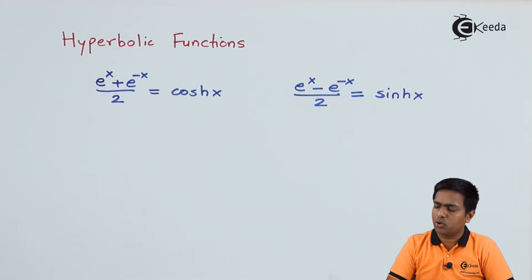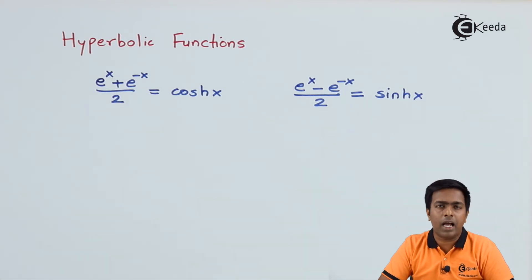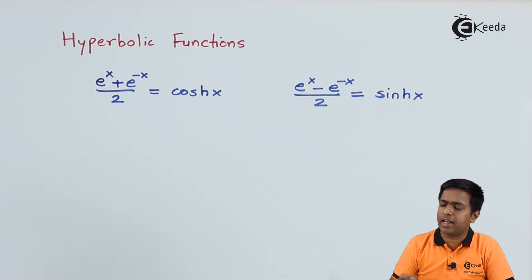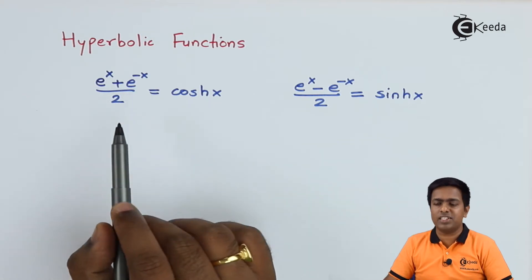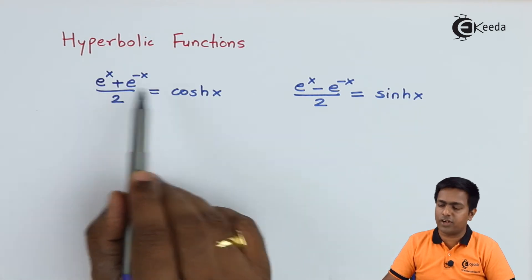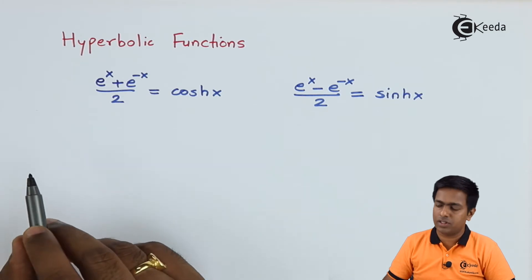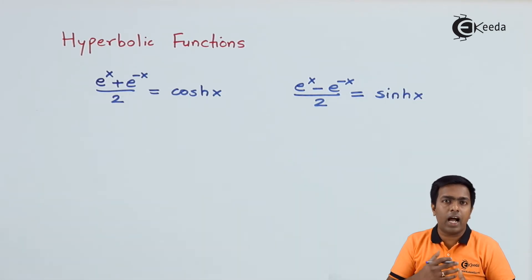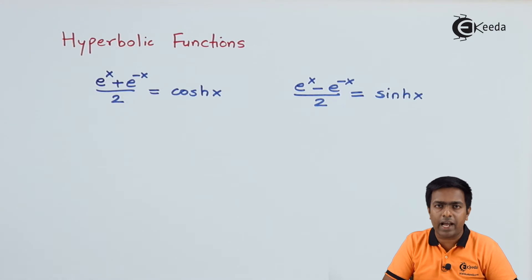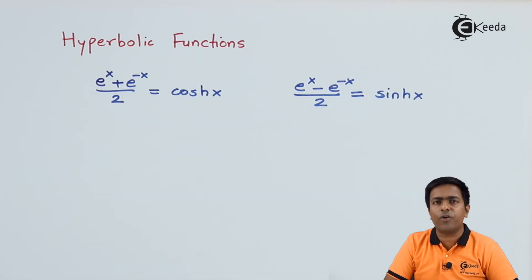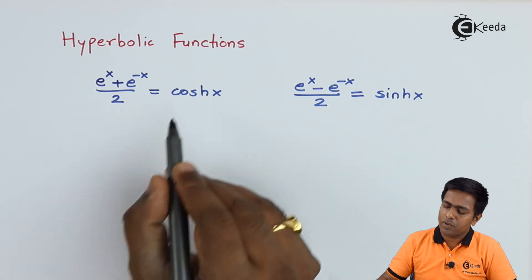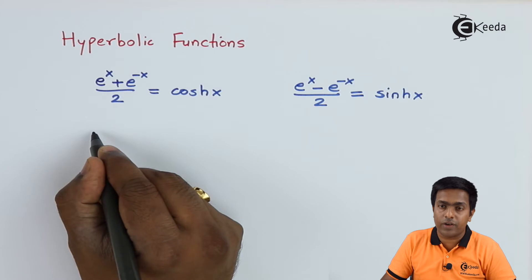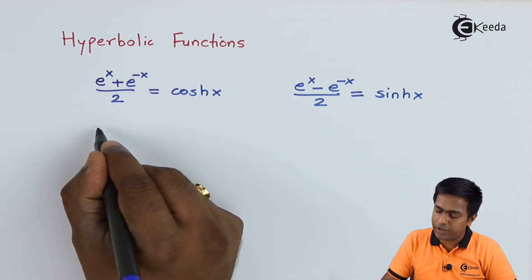These are the standard hyperbolic functions. Here you can see the relationship between the exponential function and the hyperbolic function. From these functions we can also derive hyperbolic tan of x, hyperbolic cot of x, hyperbolic sech of x, and hyperbolic cosech of x. Let's find the value of hyperbolic sech of x first.